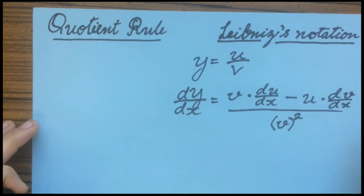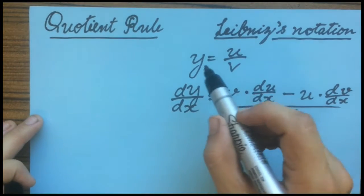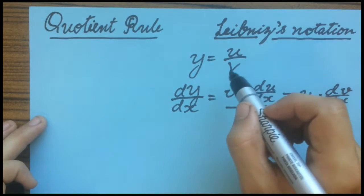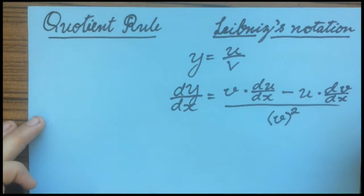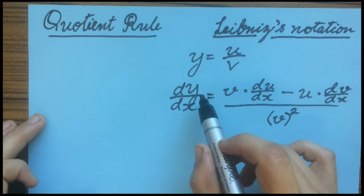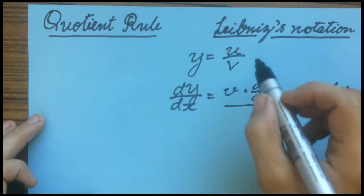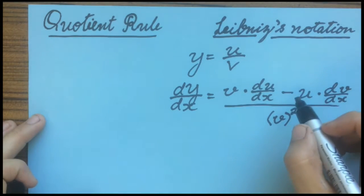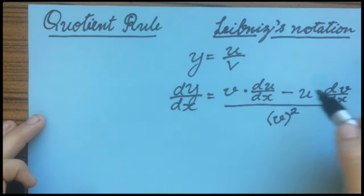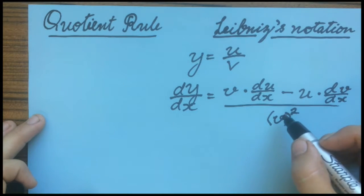So, this is the Quotient Rule formula. You have a function which equals a function over a function, or a function divided by a function. So the derivative of that is: the derivative equals V multiplied by the derivative of U with respect to X, minus U multiplied by the derivative of V with respect to X. And all of this is over V squared.